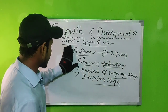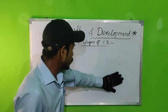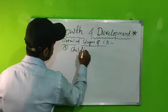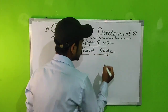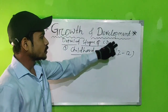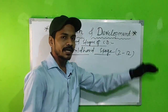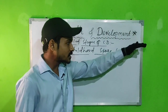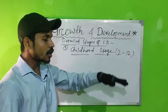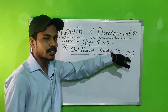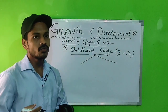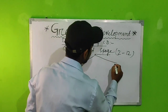The third stage of child development is the childhood stage, which is a very important stage. It holds the age factor of two to twelve years. The stages are interrelated — prenatal is conception to birth, infancy is zero to two years, and childhood starts at two years and ends at twelve years. Childhood is further divided into two types: early childhood and later childhood.